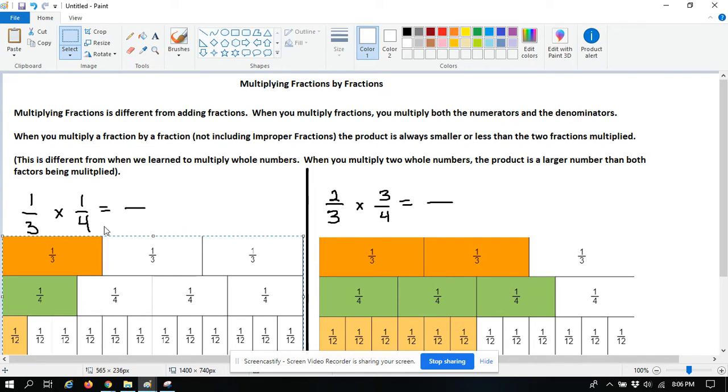So when you multiply fractions, it's different from when you added fractions. If you remember when you added fractions, you could only add the numerators, but your denominator stayed the same.